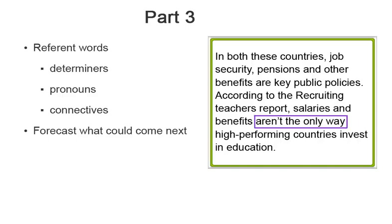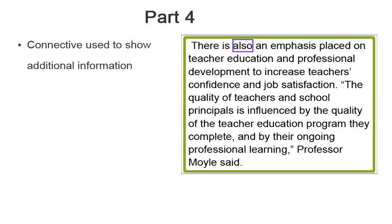The next sentence indicates a second example for countries investing in education. Therefore, it can be expected that the next part of the paragraph provides another example. In this section of the paragraph, an additional example of countries investing in education can be found. This is signposted by a connective.